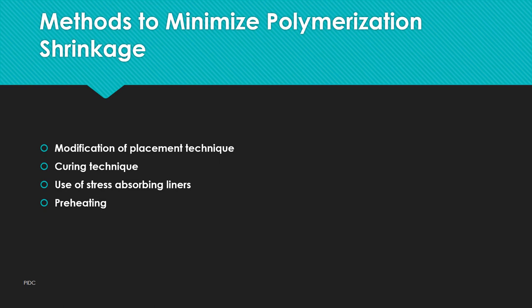Regarding curing technique: when composite resins are cured at inadequate levels of conversion during polymerization, it may result in shrinkage. Curing composite in 2 mm increments is recommended. Also, a soft-start polymerization rather than high-intensity light curing is preferred.